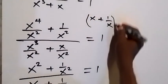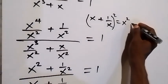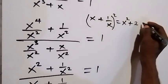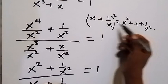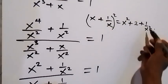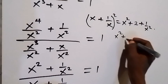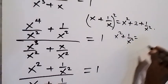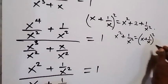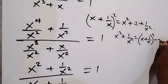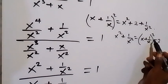When we square x plus 1 over x, it gives us x squared, plus 2 times x times 1 over x — that's plus 2 — plus 1 over x squared. We can rearrange this so that x squared plus 1 over x squared stands alone. So we can say that x squared plus 1 over x squared equals x plus 1 over x all squared minus 2. We can simply write x plus 1 over x all squared minus 2 in its place.